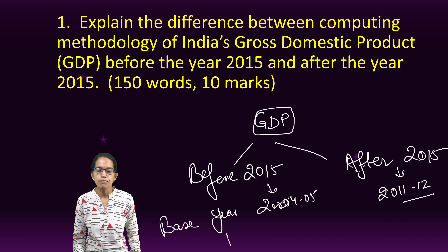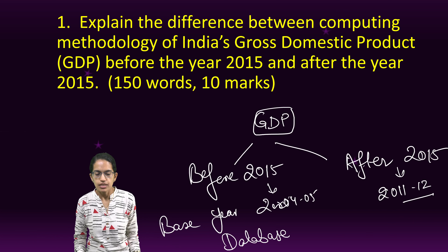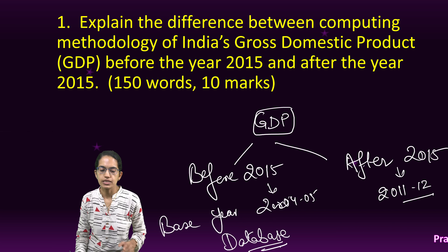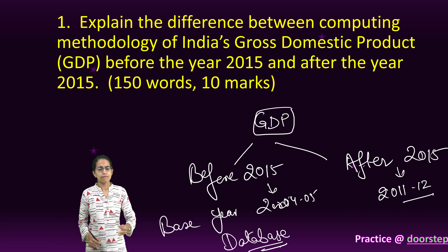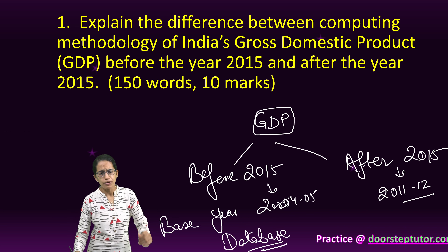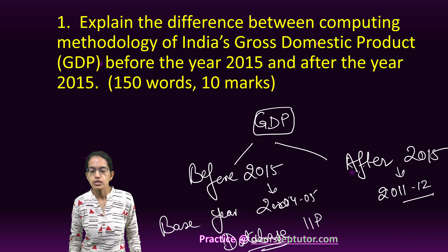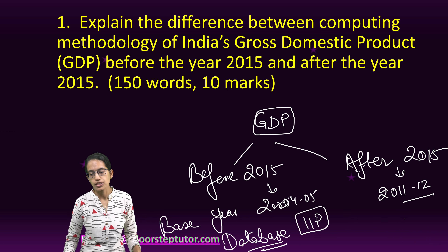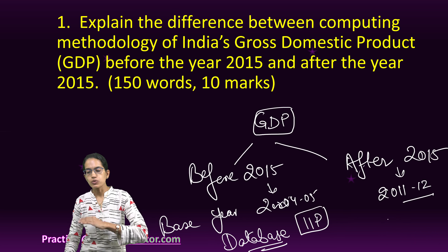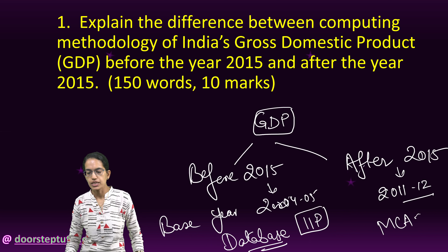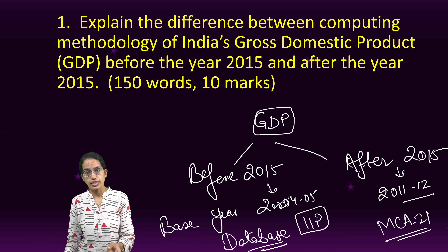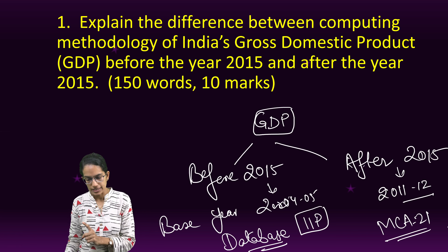Besides the base year, there is also a change in the database — two prominent things we must understand here. Before 2015, the database was the Index of Industrial Production (IIP). After 2015, it is the MCA21 database, which accounts for the organized private sector as well.